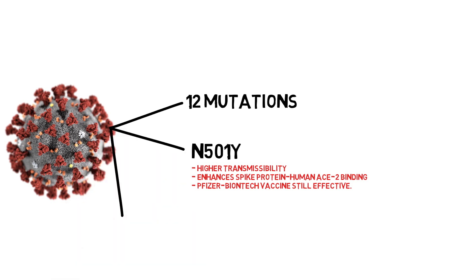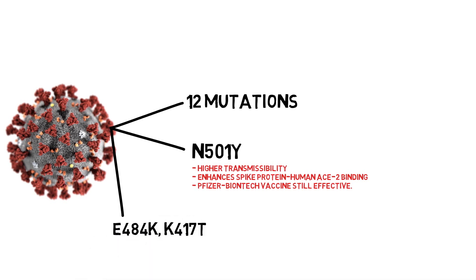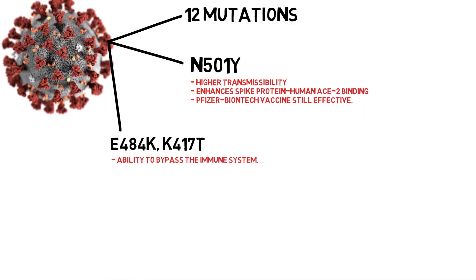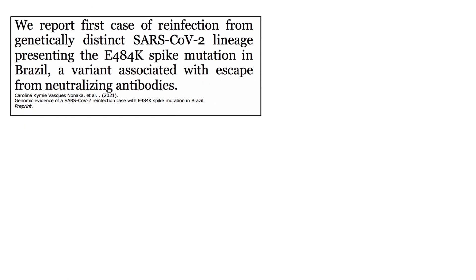However, this variant also harbours mutations in the 484 and 417 amino acid positions of the spike protein. Alarmingly, scientists have suggested that coronaviruses containing this E484K mutation have the ability to bypass the immune system. A study published on the 6th of January highlighted the first case of reinfection from a genetically distinct SARS-CoV-2 variant presenting the E484K spike mutation in Brazil — a variant associated with escape from neutralising antibodies.